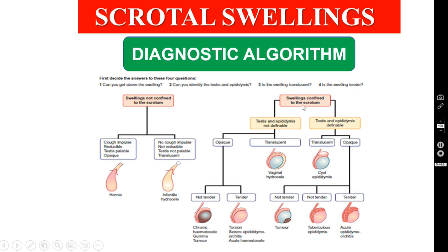Suppose the swelling is confined to the scrotum — you have to look whether the testis and epididymis are separately palpable or not. If not palpable and the swelling is opaque and non-tender, we are dealing with chronic hematocele or gumma of the testis. If opaque but tender, we are dealing with torsion testis, severe epididymo-orchitis, or acute hematocele. If the testis and epididymis are not separately palpable but the swelling is transilluminant, we are dealing with vaginal hydrocele. If the testis and epididymis are separately palpable and it is transilluminant, we are dealing with epididymal cysts — which is what I am going to discuss in this episode.